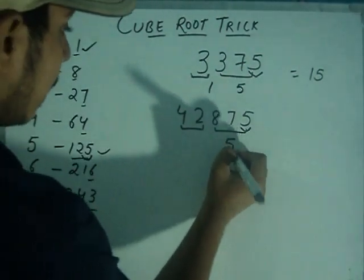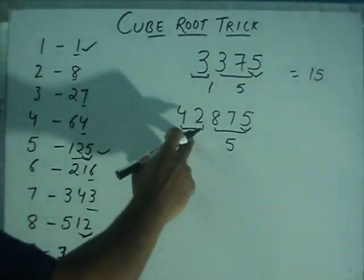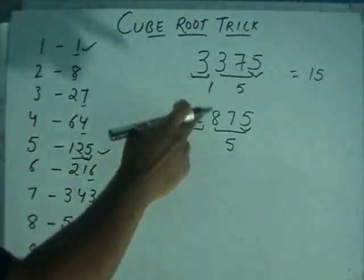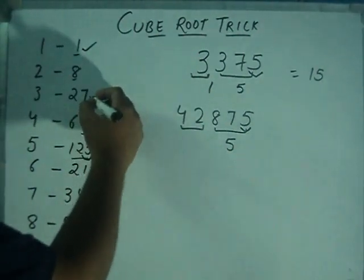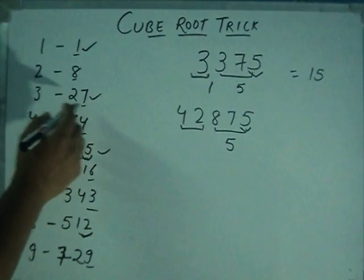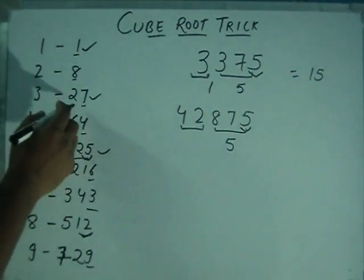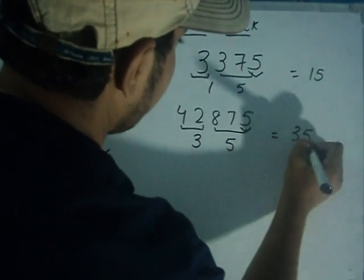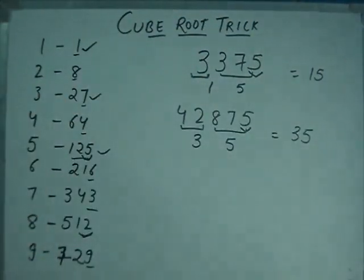So we write it as over here 5. For the second part, look at the table and check the number nearer to it and lesser than it. We get 27. So the cubic value of 27 is 3. So we write 3 here. And 35 is the cube root of 42875.